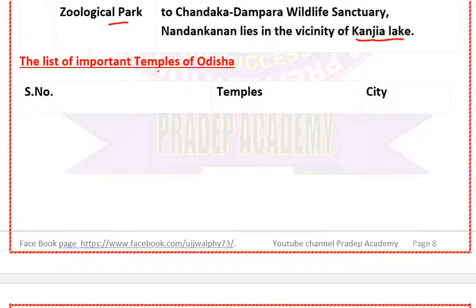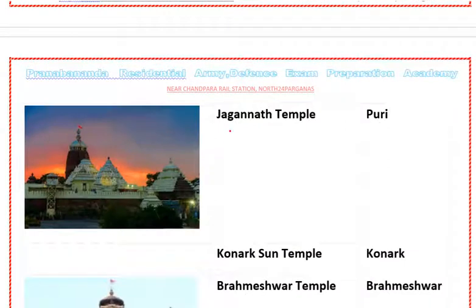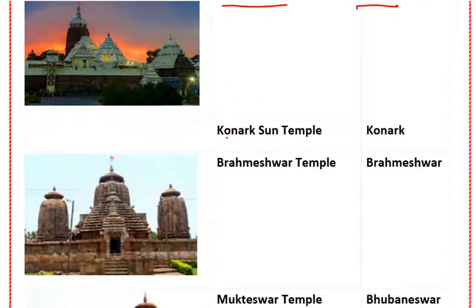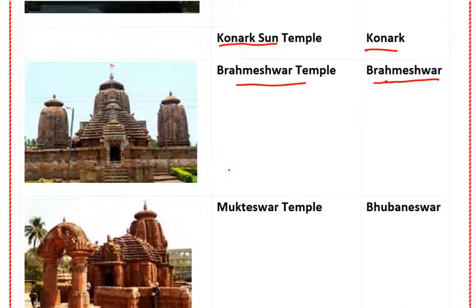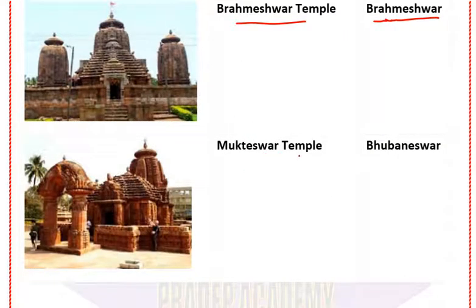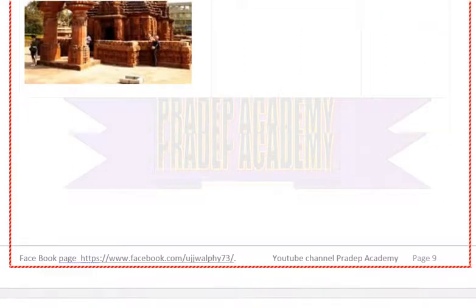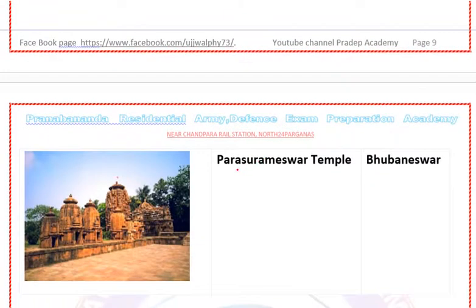Important temples of Odisha: The Jagannath Temple is in Puri district. The Sun Temple is at Konark in Konark district. The Brahmeswara Temple is in Bhubaneswar. The Mukteshwar Temple is in Bhubaneswar. The Parsurameswar Temple is also in Bhubaneswar.